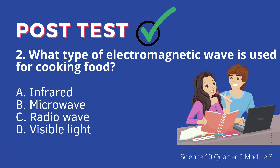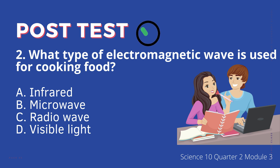2. What type of electromagnetic wave is used for cooking food? A. Infrared, B. Microwave, C. Radio wave, D. Visible light.